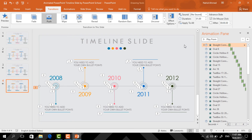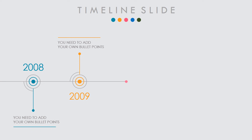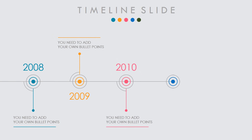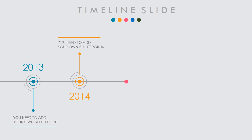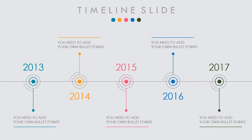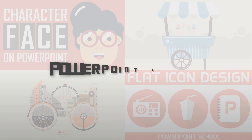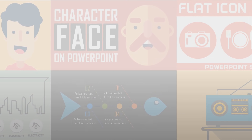Now go to Transition, select Push, then from Effect Options select From Right. Here we are done. If you start the slideshow you can see that the whole animation is working perfectly, and we have added one extra slide with a simple transition — it looks great when the transition happens. You can use this template for your presentation. The download link is in the video description. If you enjoyed this tutorial make sure to like and subscribe, and don't forget to share with your friends. Hope to see you in the next tutorial — thanks for watching!